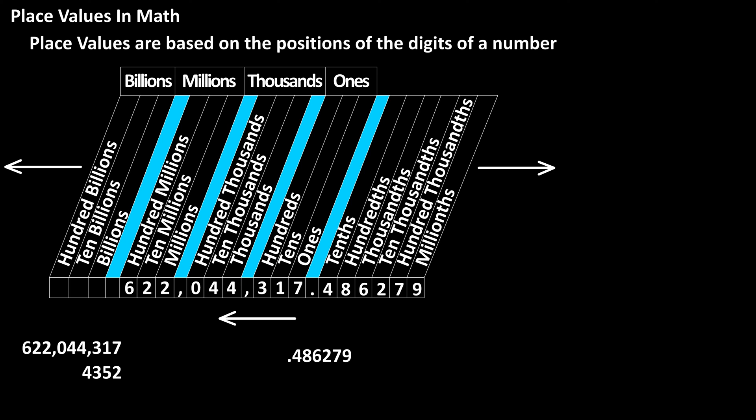And the place values can actually go out further, if you're dealing with extremely small or precise numbers.